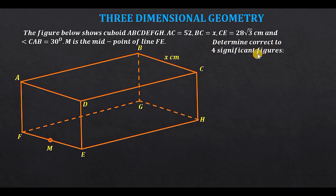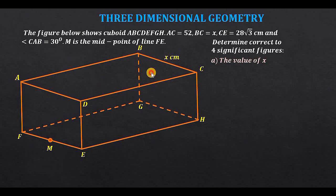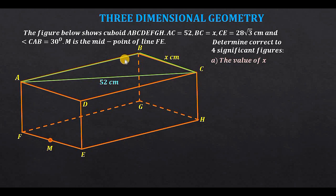We are required to determine, correct to four significant figures: part A, the value of X, which is line BC. Before we determine that, let's consider length AC, given as 52 centimeters. AC completes triangle ABC, which is a right-angle triangle — right-angled at point B. Triangle ABC is part of plane ABCD, which is a rectangle, and by the properties of rectangles the corners are 90 degrees.